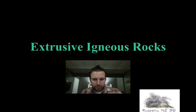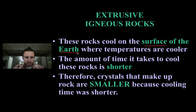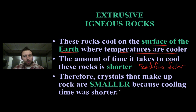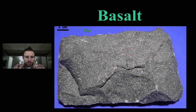Now on to extrusive igneous rocks — these are rocks that formed on the outside, on the surface of the earth. At the surface, there is nothing to insulate or hold in the heat, so temperatures are cooler. Because it solidifies faster, we end up with smaller crystals. Basalt is a very common extrusive igneous rock — you can see small specks throughout this mostly dark gray rock.